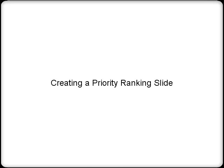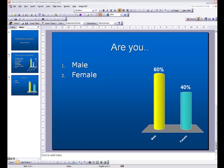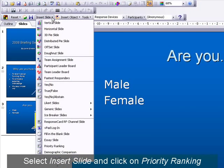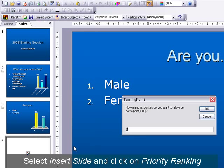Creating a priority ranking slide. Select Insert Slide on the TurningPoint toolbar, then click on Priority Ranking.